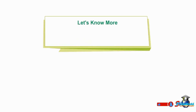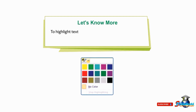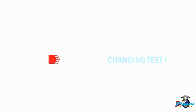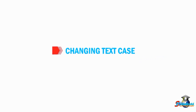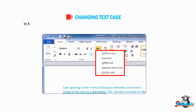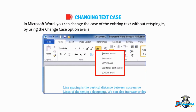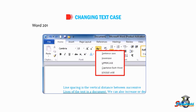To highlight text, select it, then click on the Text Highlight Color tool, select any color, and observe the change. Now we will discuss how to change text case. In Microsoft Word, you can change the case of existing text without retyping it by using the Change Case option available in the Font group.